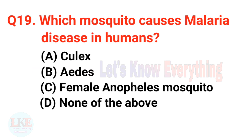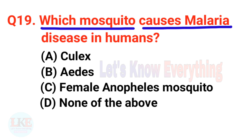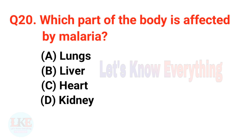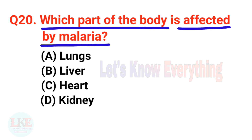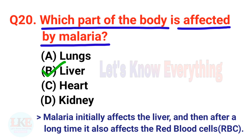Question number nineteen: which mosquito causes malaria disease in humans? The right answer is the female Anopheles mosquito. Question number twenty: which part of the body is affected by malaria? The right answer is option B, liver or spleen. Malaria initially affects the liver, and after a long time it also affects the red blood cells (RBC).